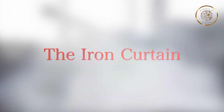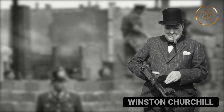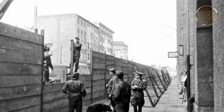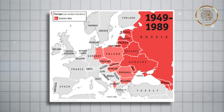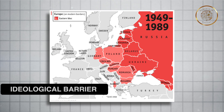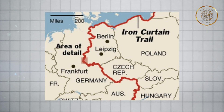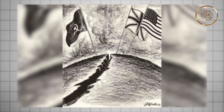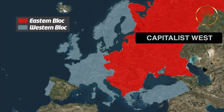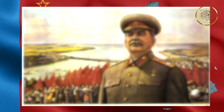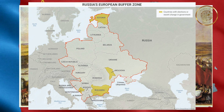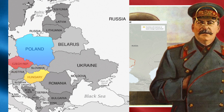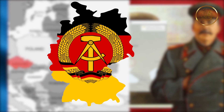The Iron Curtain — a term coined by Winston Churchill — played a pivotal role in the Cold War between the United States and the Soviet Union. After World War II, Europe became divided into two distinct blocs, separated by an ideological and political barrier. The Iron Curtain was not just a physical division, but a symbol of the stark contrast between the capitalist West and the communist East. The Soviet Union, led by Joseph Stalin, sought to establish control over Eastern European countries as a buffer zone between them and the Western powers. Countries such as Poland, Hungary, Czechoslovakia, and East Germany fell under the Soviet sphere of influence.